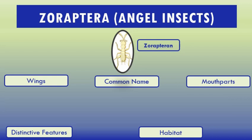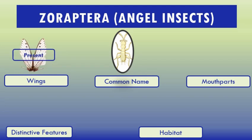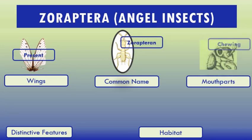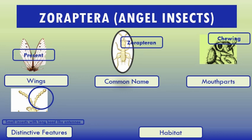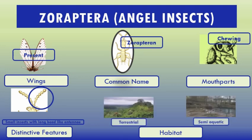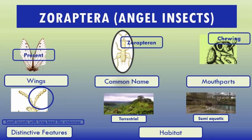Each species shows polymorphism, meaning individuals differ from each other. Common characteristics of Zoraptera angel insects: wings present, common name angel insects, mouthparts chewing. Distinctive feature: small insects with long bead-like antennae, as you can see in the image. Their habitat is terrestrial and semi-aquatic.